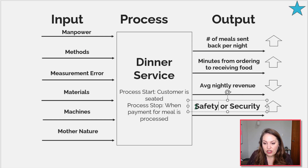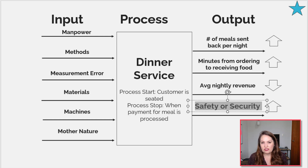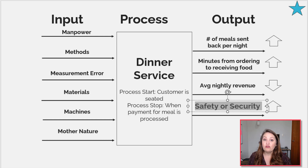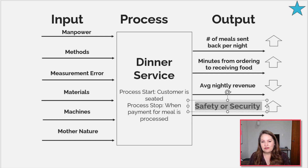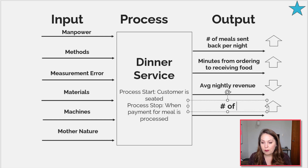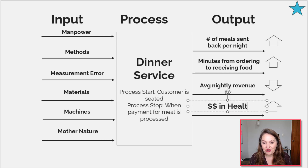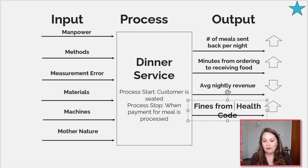Safety or security is kind of a hard one for people, but regardless of what project we're working on, it's important that you call out safety and security. As a continuous improvement professional, sometimes people can see us as not looking out for some of those secondary things that could cause problems — and people might say we broke the process or it wasn't broken, why did we fix it? Safety and security is something we always want to keep visible. For dinner service, that might be dollars in health code fines from health code violations.